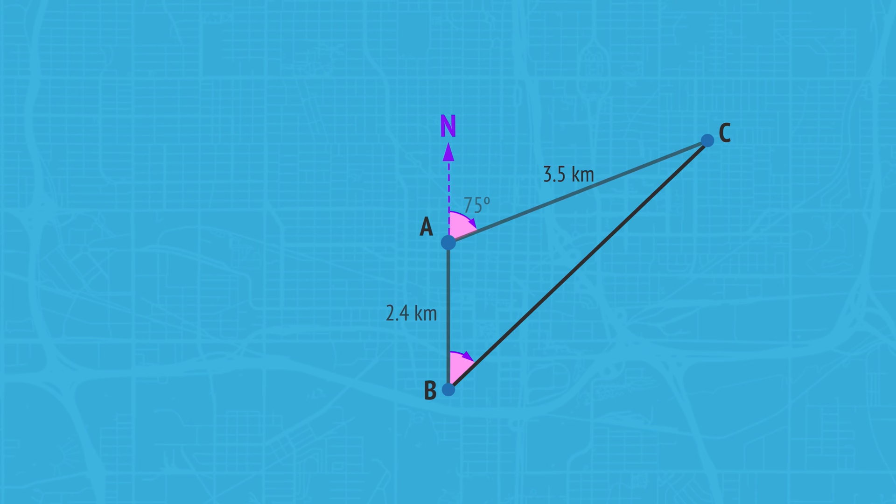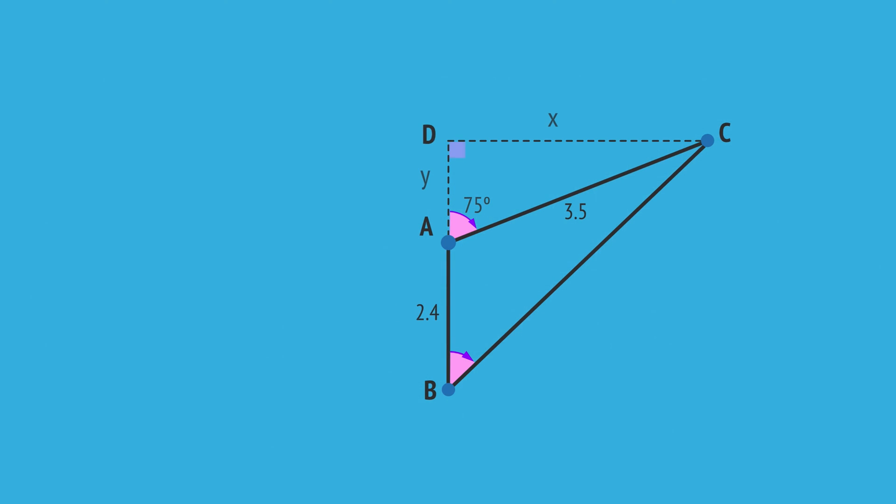In problems like this, it's useful to draw lines to form right-angle triangles. By drawing these lines with a right angle at D, we form triangles ADC and BDC.